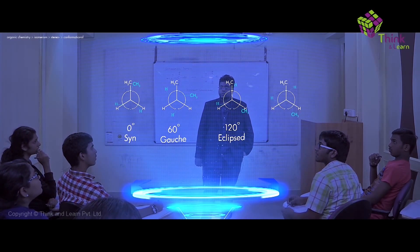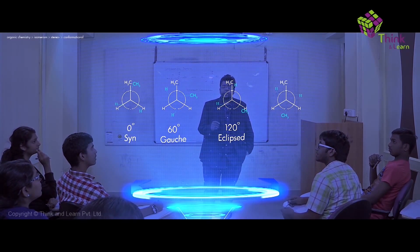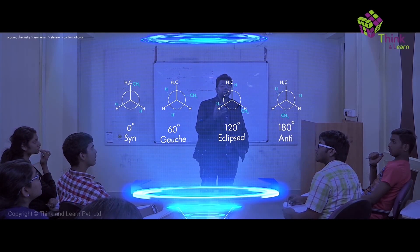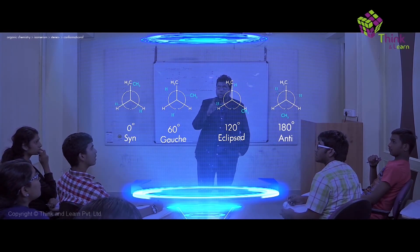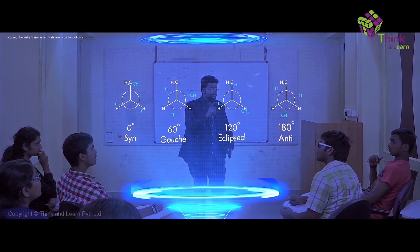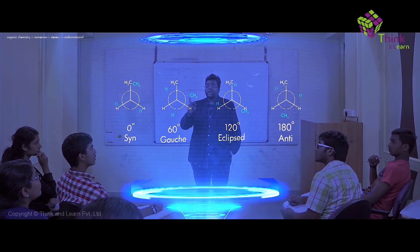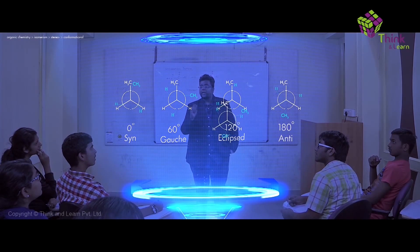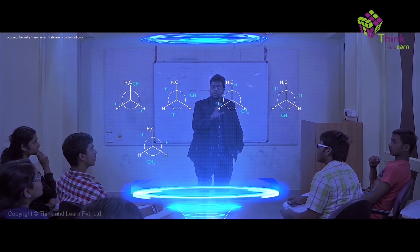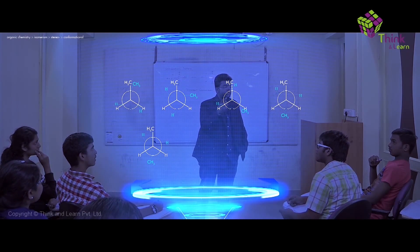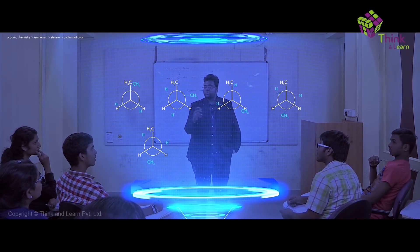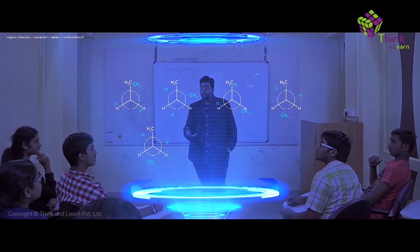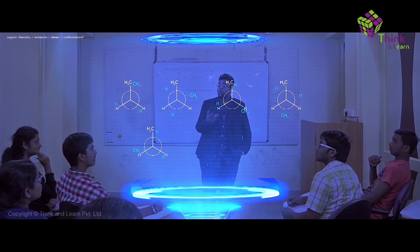If I move it by 60 degrees more, the dihedral angle is now 180 degrees, and this conformation is called the staggered conformation. If you look carefully, CH3 and CH3 are exactly opposite to each other, so this is called the anti conformation. To summarize: fully staggered is called anti, and fully eclipsed is called syn.